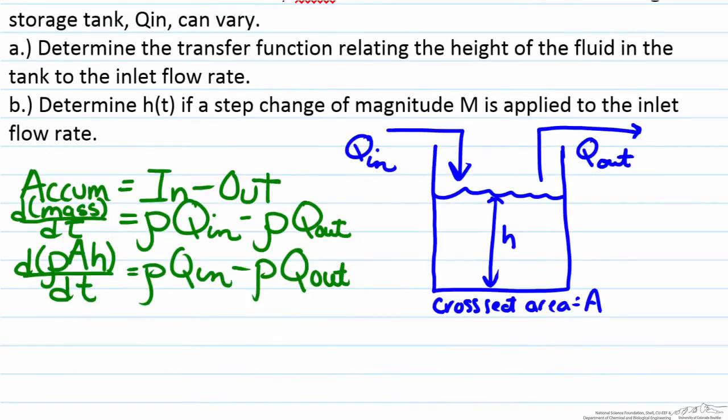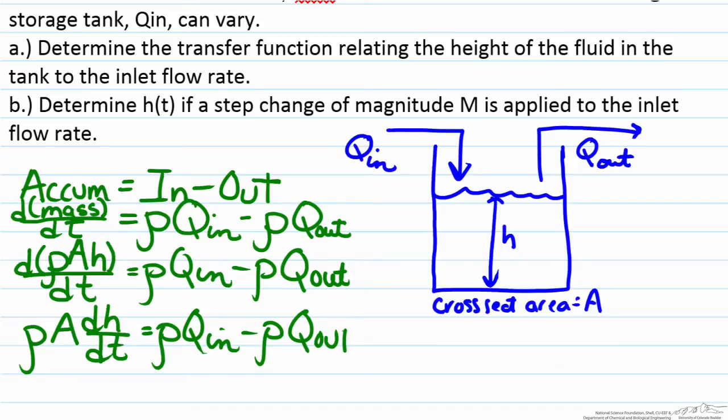Due to the fact that rho and A are constant values we can factor them out, and it leaves us with our differential equation, our mass balance. As a final step we can cancel out all the rhos.